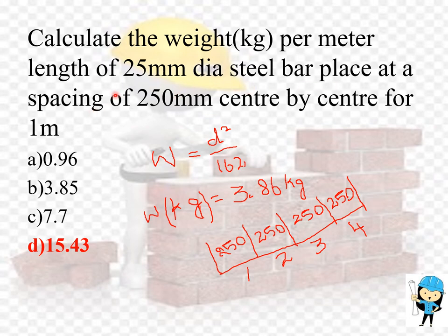In the question they mentioned the steel rod is placed at a spacing of 250mm center by center for 1 meter. So the 1 meter length divided by 250mm spacing gives us 4 places. In 4 places the steel rods are placed. The total weight is calculated by the formula 3.86 into total number of steel rods, that is 4. 4 into 3.86, we get 15.43 kilogram.